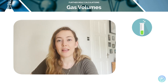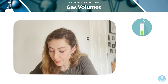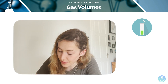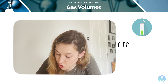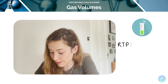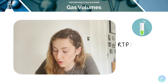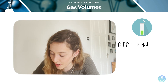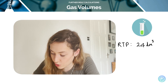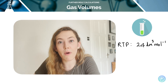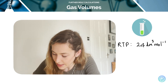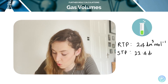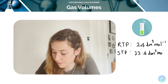The molar gas volume is the volume in decimetre cubed taken up by one mole of gas at a certain temperature and pressure. At room temperature and pressure (RTP), one mole of gas occupies 24 dm³, written as 24 dm³ per mole. At standard temperature and pressure (STP), it's 22.4 dm³ per mole.